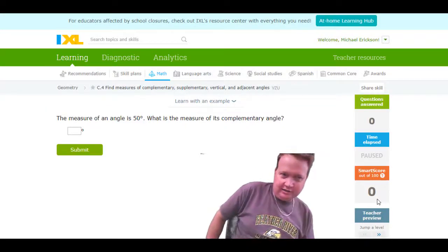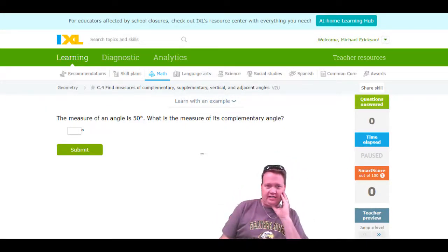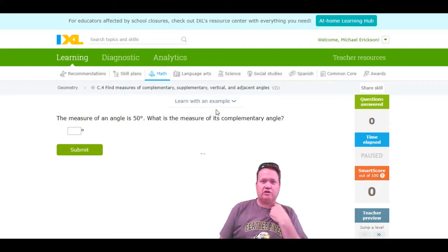We're going to walk through this IXL C4 on finding complementary, supplementary, vertical, and adjacent angles. Adjacent means angles that are right next to each other. Let's go through this. We're going to go kind of quickly through this lesson. It's not very hard.